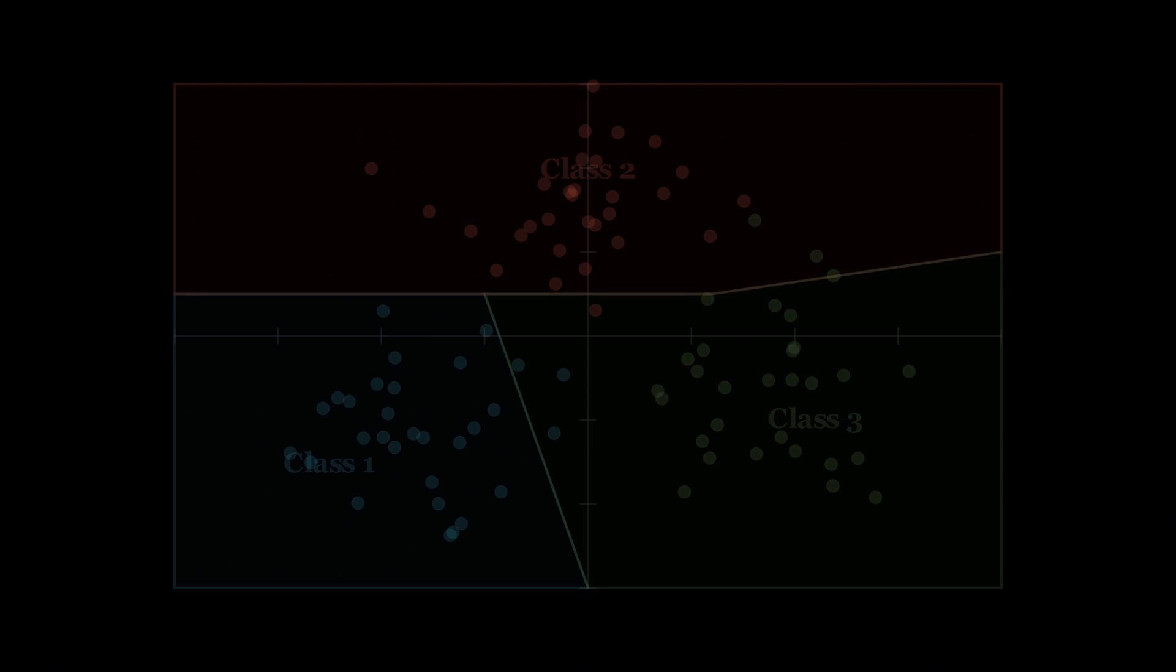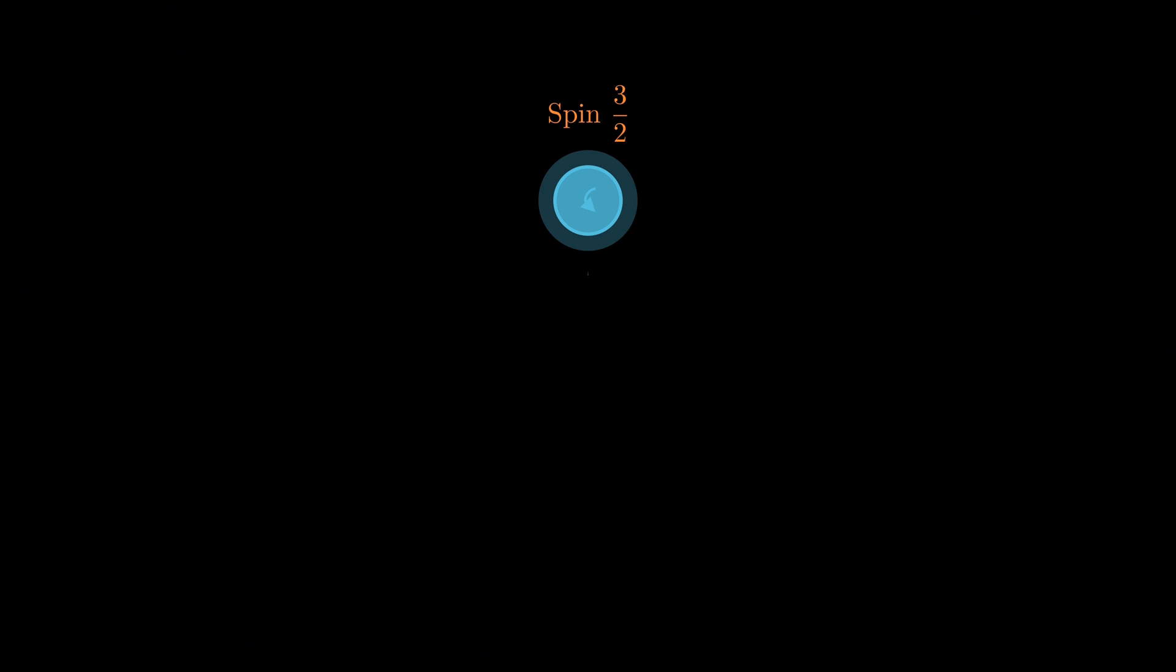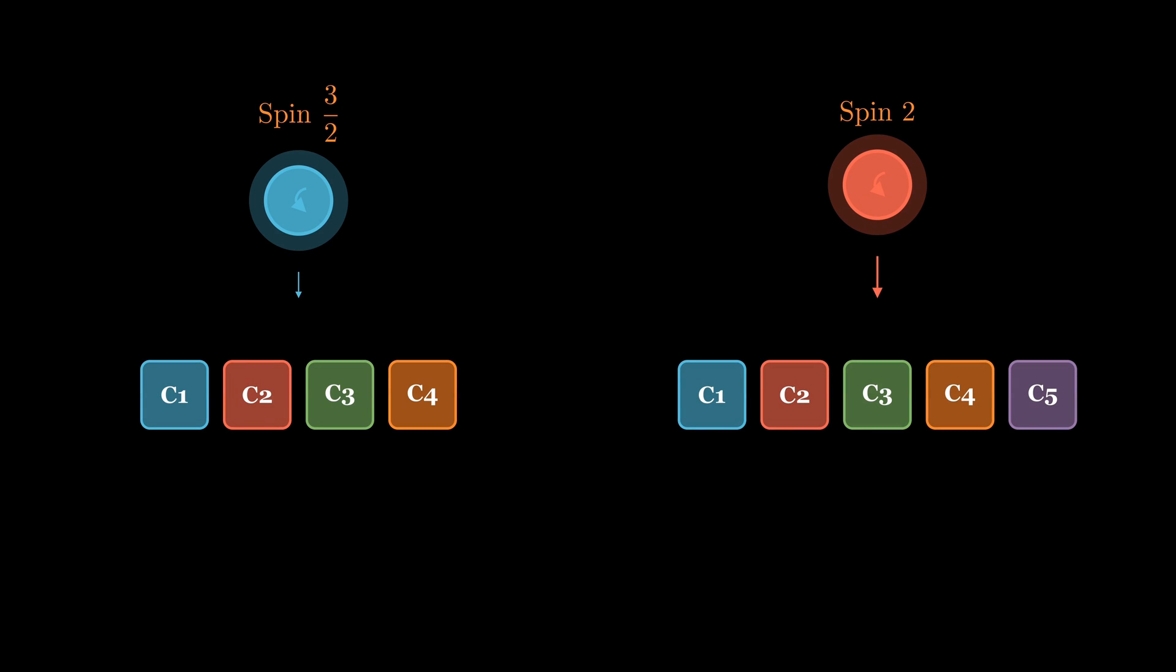More surprisingly, if the particle had spin one and a half, the classifier could detect four classes. If it had spin two, the classifier could detect five classes. So there's a one-to-one relationship between the spin number of a particle and the number of classes its dual machine learning model can classify. But where exactly does this relationship come from? That's the question we'll answer today.